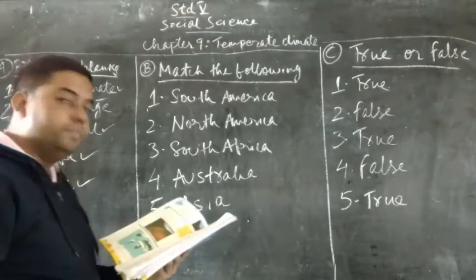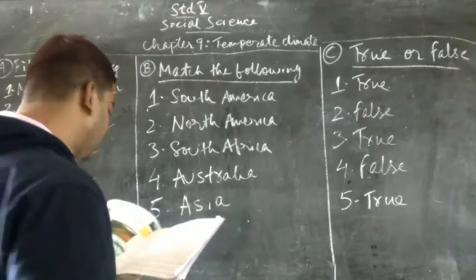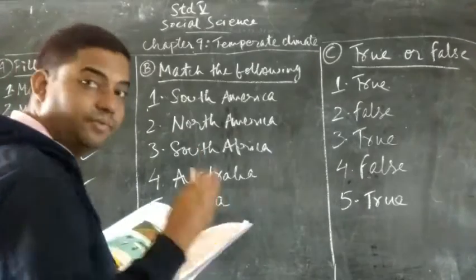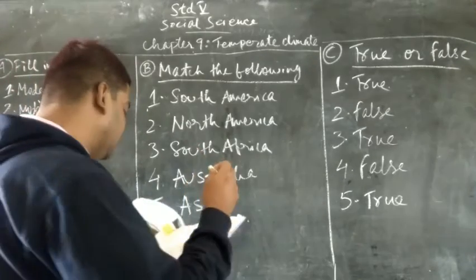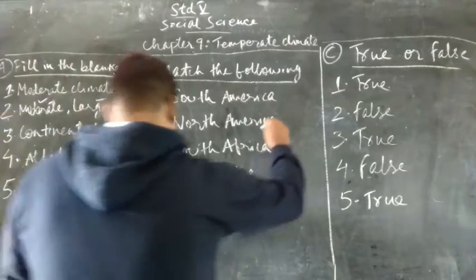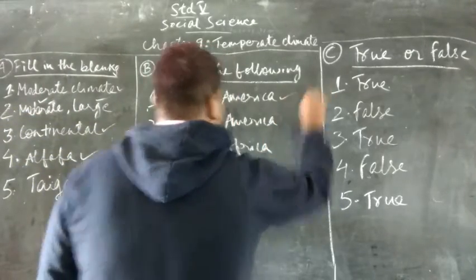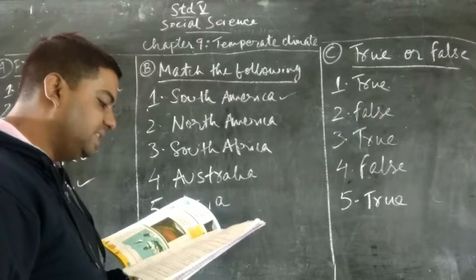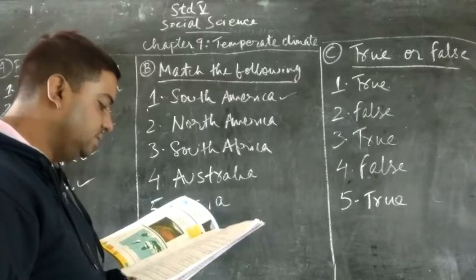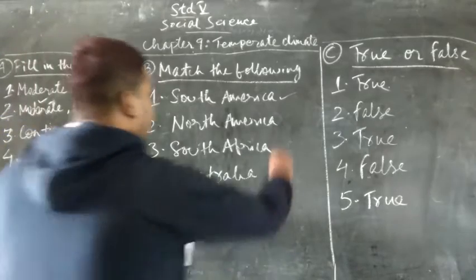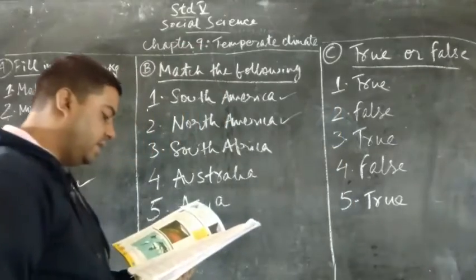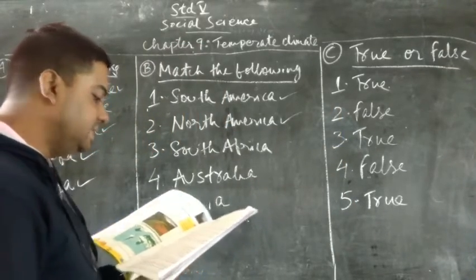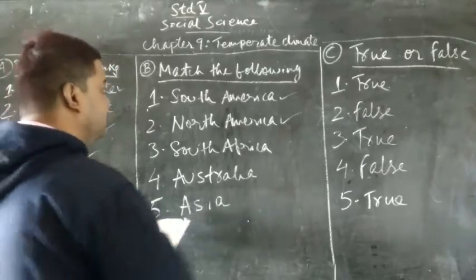Now we come to B: Match the following. Question 1 is Pampas — the answer is South America. Question 2 is Prairie — the answer is North America. Question 3 is Veld — the answer is South Africa.